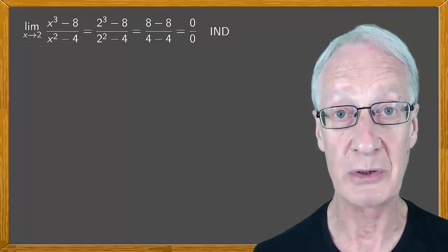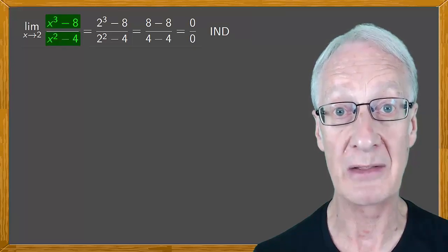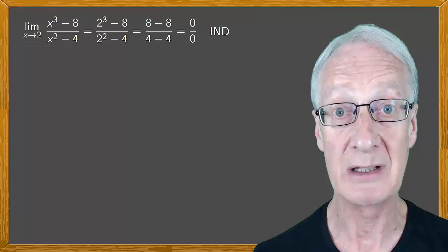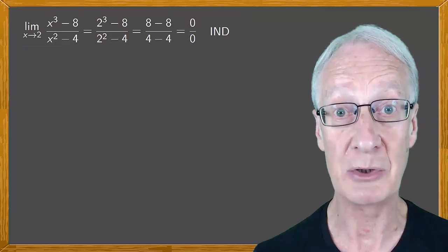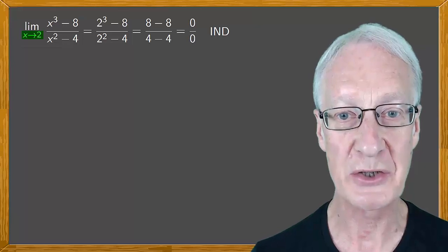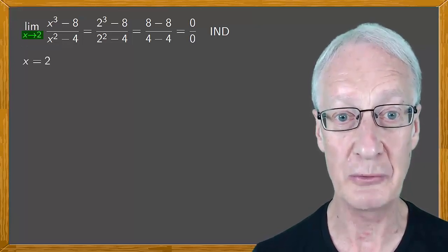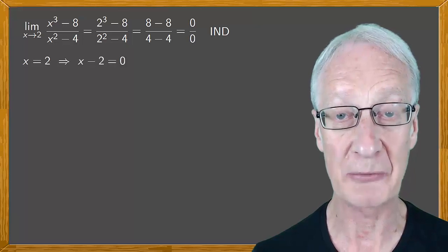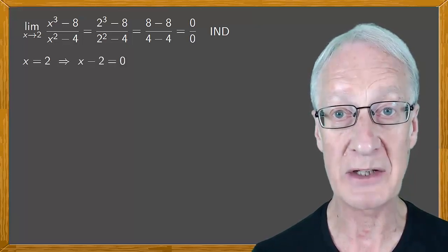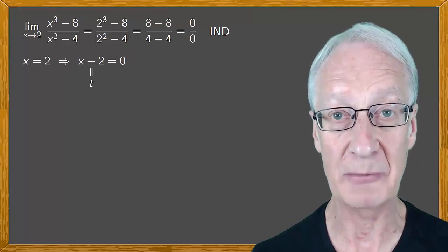One option would be to factor the numerator and the denominator and then simplify it. But we'll do it by changing the variable. So as x tends to 2, we're approaching x equals 2, from which we have that x minus 2 equals 0. So let t equal x minus 2.